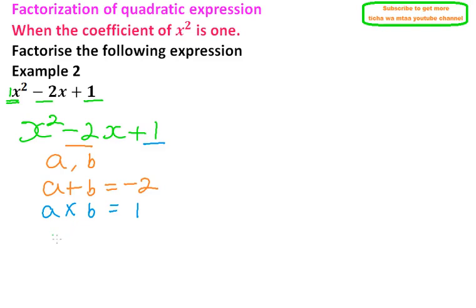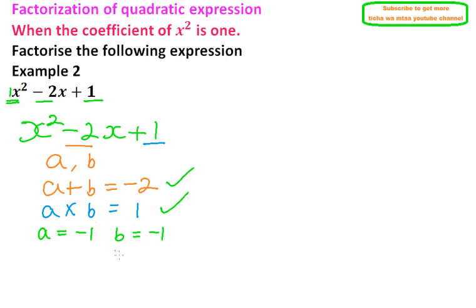The two numbers are minus 1 and minus 1. So a equals minus 1 and b equals minus 1. When you add minus 1 plus minus 1, you get minus 2 — that's correct. When you multiply minus 1 by minus 1, you get 1. So these two numbers satisfy both conditions.